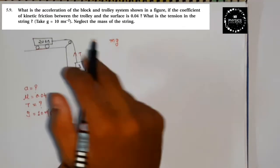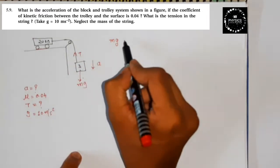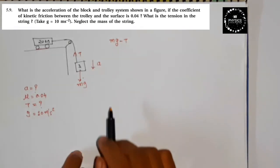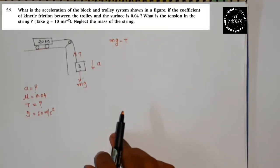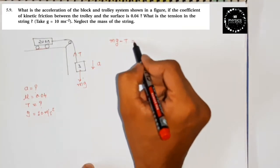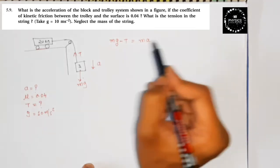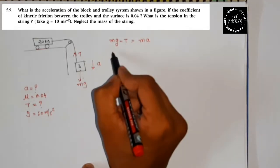Aur uske opposite mein kya hai? Uske opposite mein tension force hai. Tension force minus karke likh dijiye opposite. Vapis bol raha hun, jo direction mein aa raha hai, woh humein positive lena hai. Yaha mg direction mein aa raha hai, mg positive. Uske opposite mein minus T is equal to compulsory here mass, 3 kg.